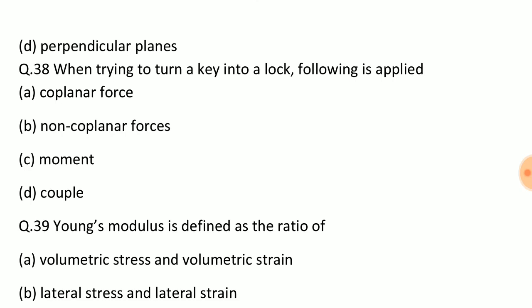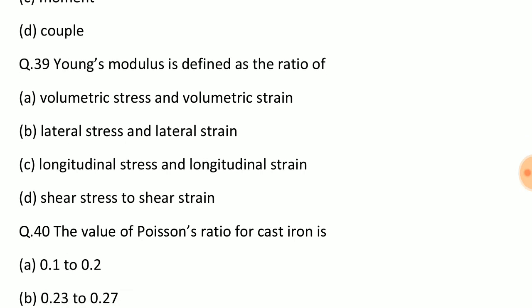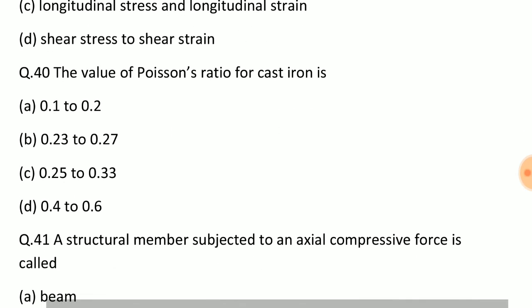Question: When trying to turn a key into a lock, the following is applied? Answer: Option D, couple. Question: Young's modulus is defined as the ratio of? Answer: Option C, longitudinal stress and longitudinal strain. Question: The value of Poisson's ratio for cast iron is? Answer: Option B, 0.23 to 0.27.